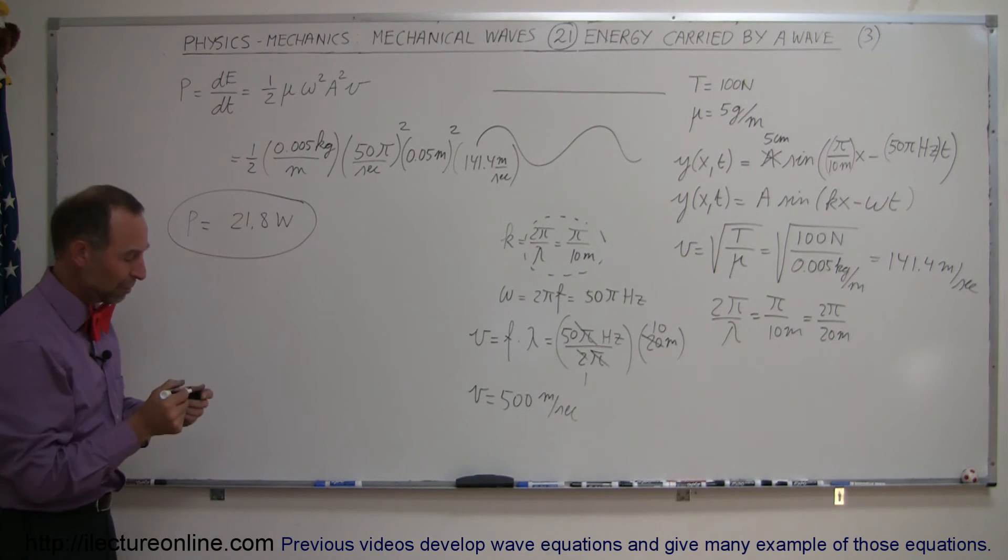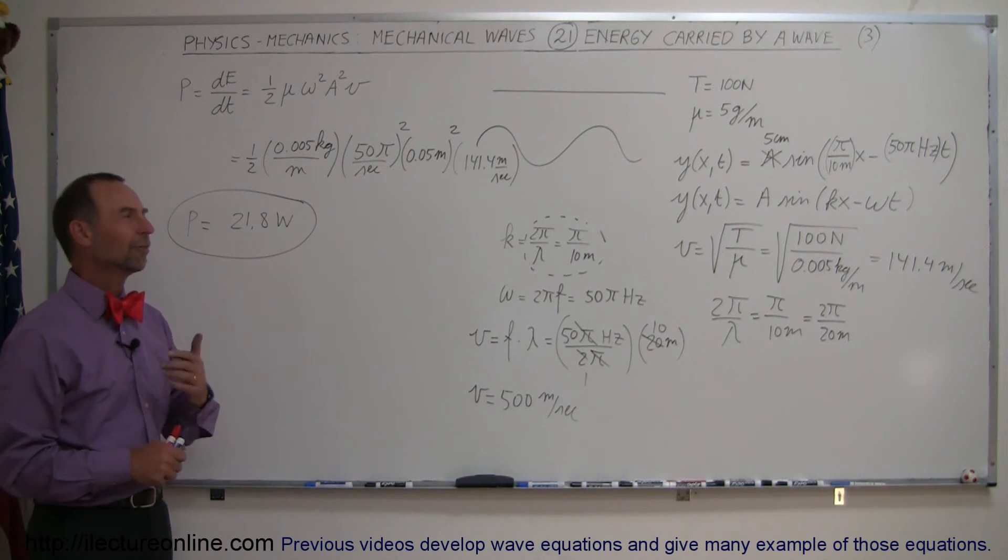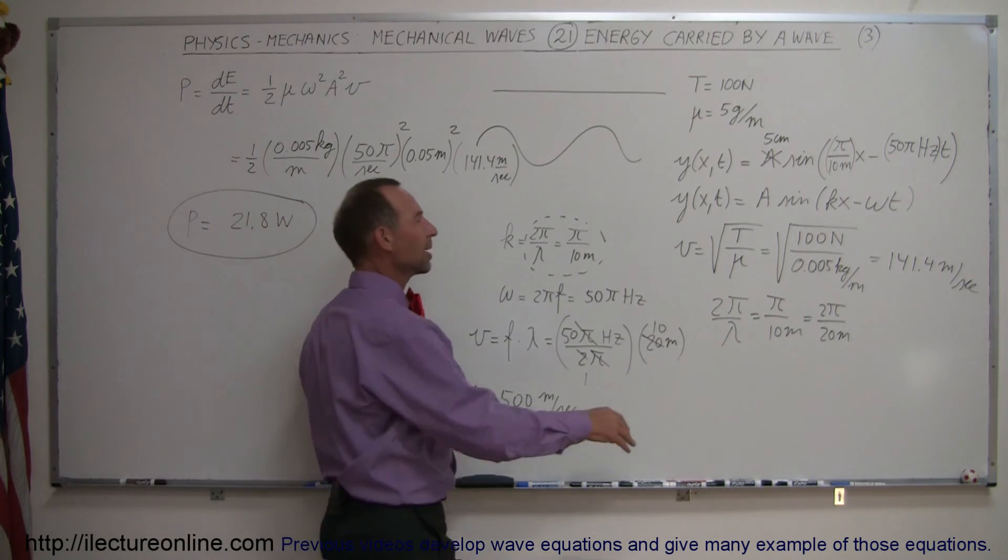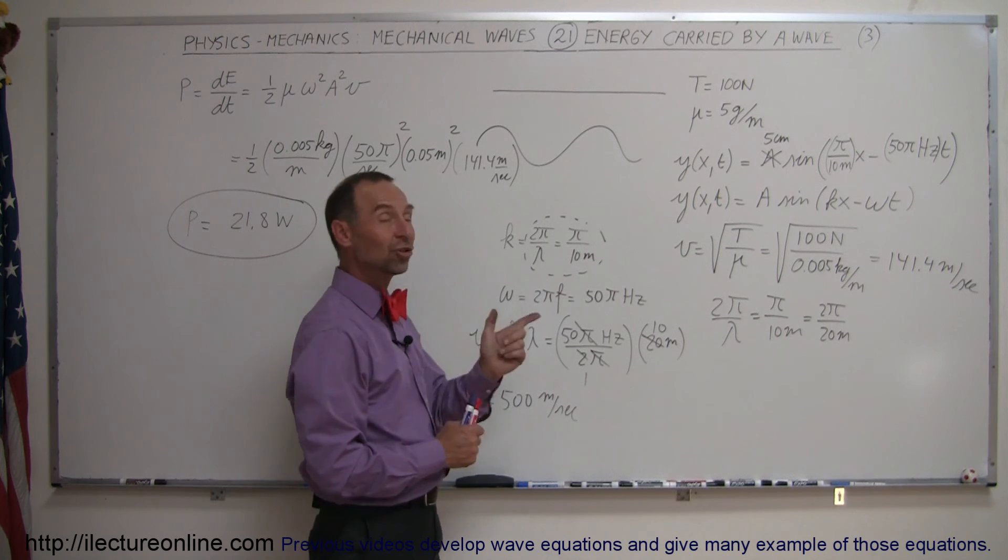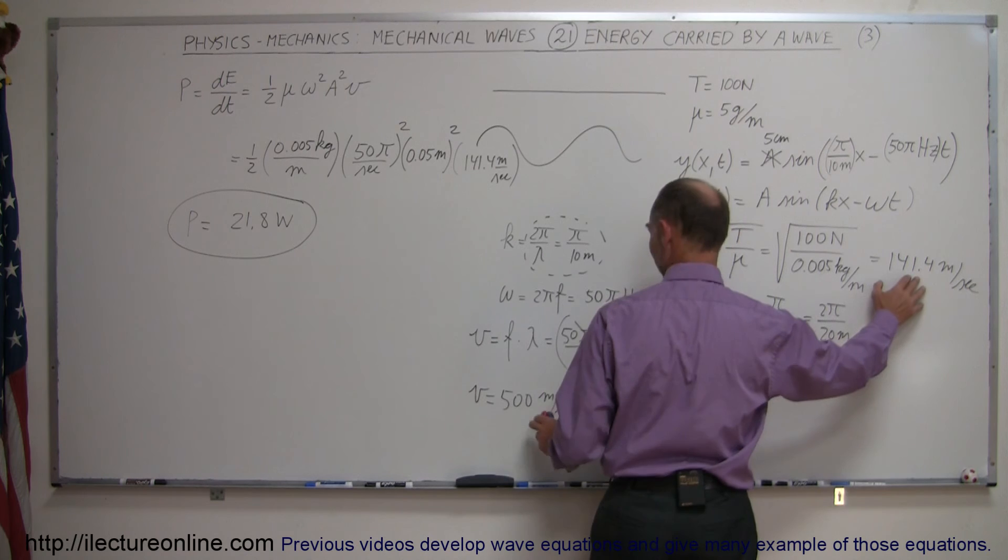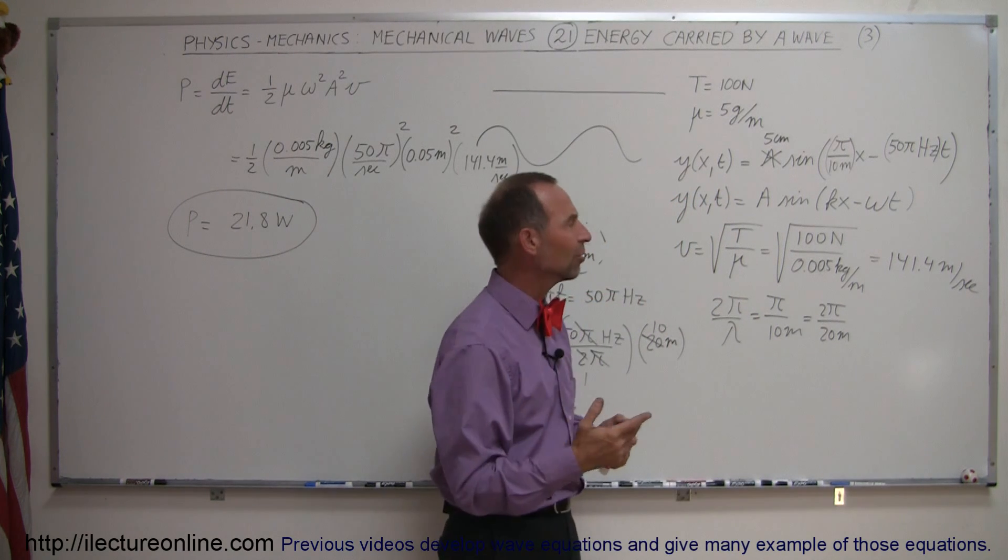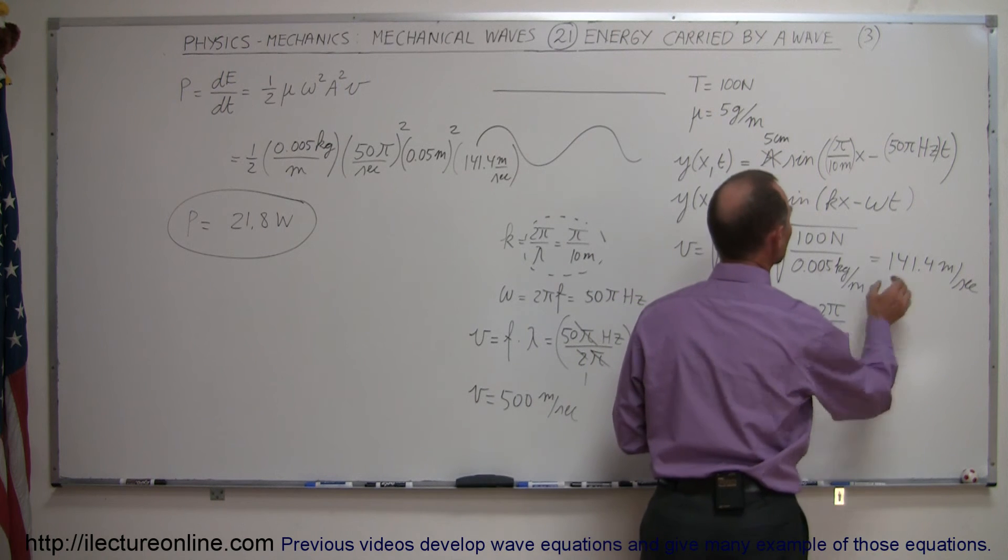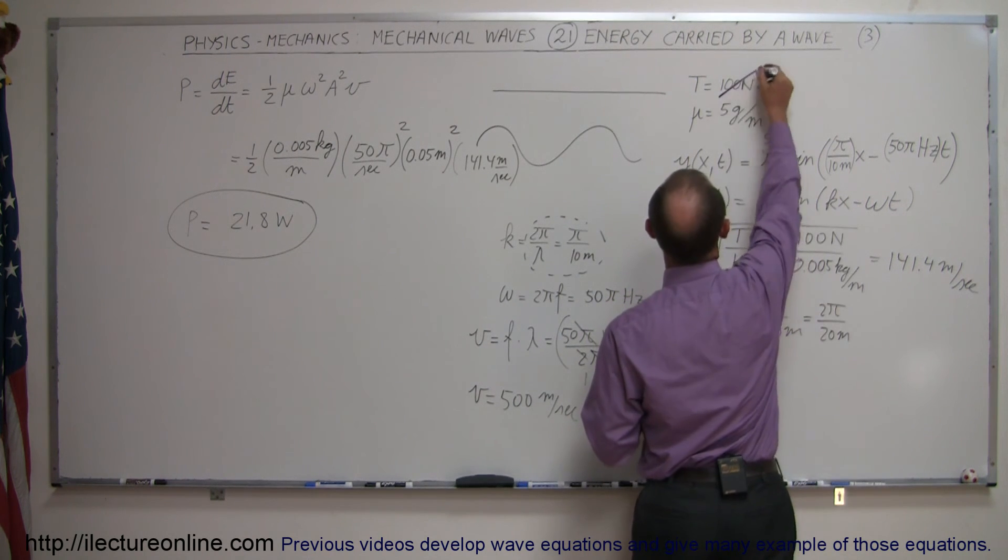Now, for those who don't feel very good about me using this number here, as opposed to this number there, one thing we could have done, I could have changed the tension to make sure that this velocity matched this velocity right here. So, let's say, how much do I need to increase the tension by to get 500 meters per second over here? So, we need a new value for tension. Let's come up with that.